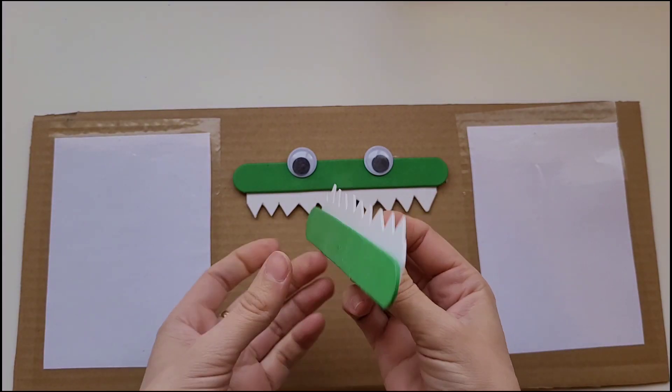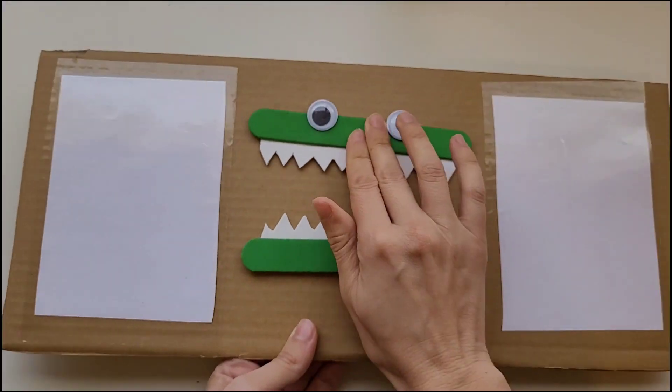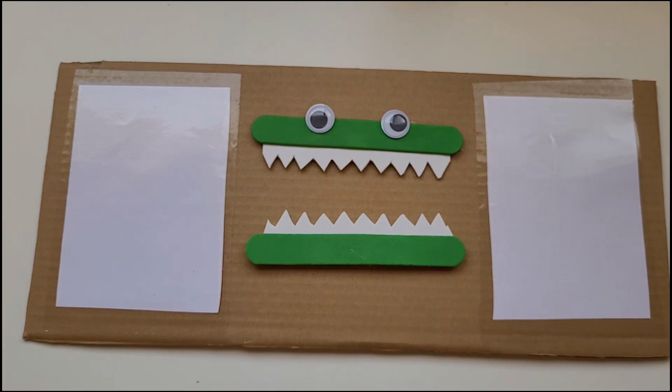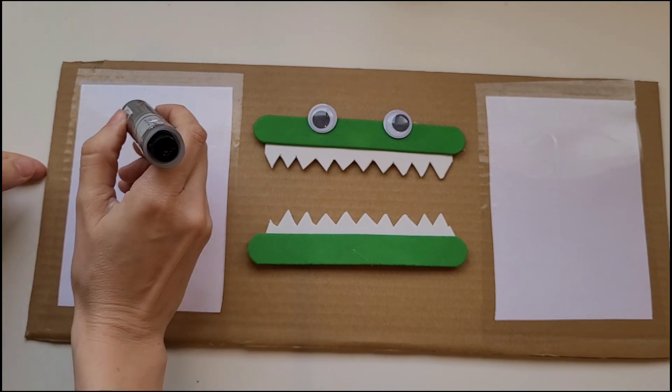If your cardboard is not thick enough you can put two pieces of cardboard on top of each other and just glue them together. Now we have an alligator.